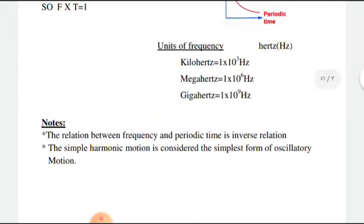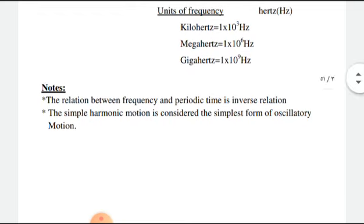In frequency, measuring unit is hertz. And we know that kilohertz is equal 1 by 10 power 3 hertz, megahertz is equal 1 by 10 power 6 hertz, gigahertz is 1 by 10 power 9 hertz.